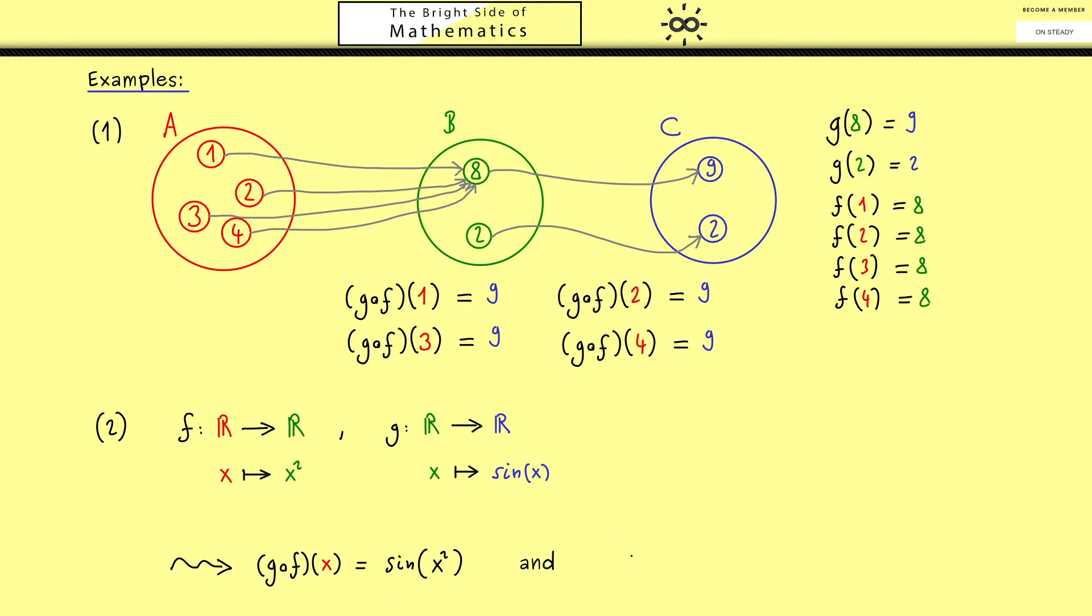However, in this example also the other way makes sense so we can form f after g. Now if we put an x into this function we first apply the sine function and then we square the result.